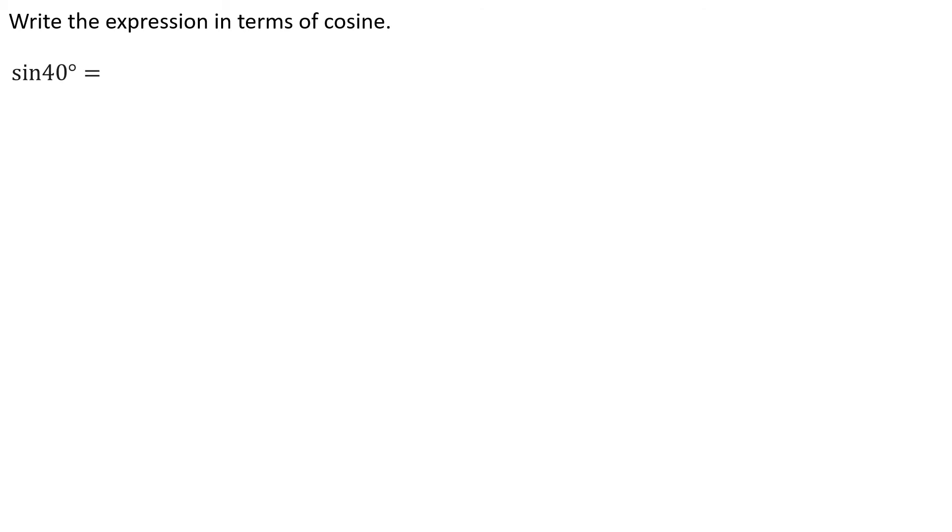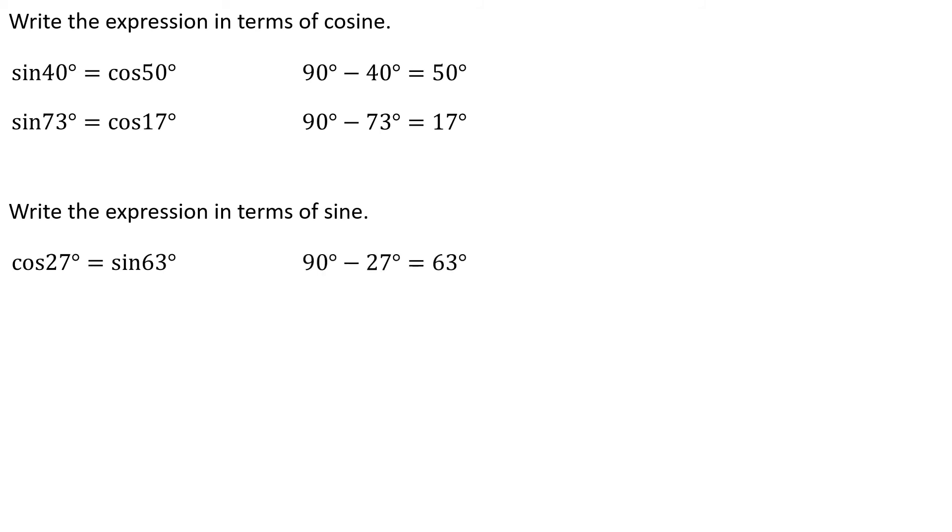The expression in terms of cosine. So, sine of 40 degrees is the same as cosine of 50 degrees, right? Because 90 subtract 40 is 50. Sine of 73 degrees. That's going to be the cosine of 17 degrees, right? If I got 90, I subtract 73, I get 17. Oh, going the opposite direction. Now, we want to rewrite in terms of sine. So, if I've got cosine of 27 degrees, that'd be the same as the sine of 63 degrees. 90 subtract 27 is 63. Cosine of 48 degrees is the same as the sine of 42 degrees. 90 subtract 48 is 42.